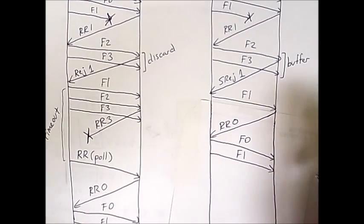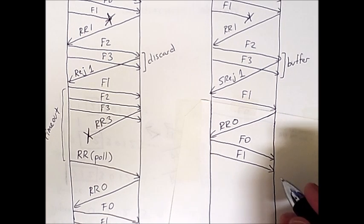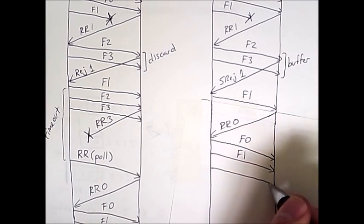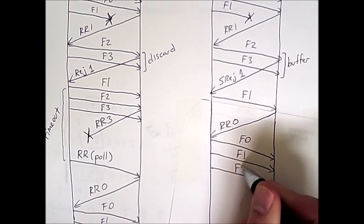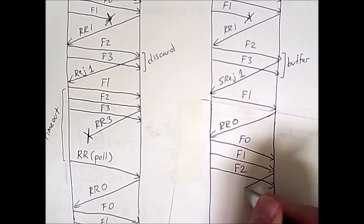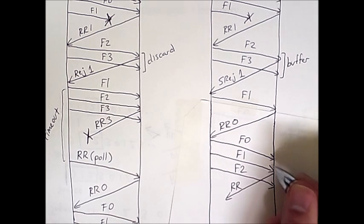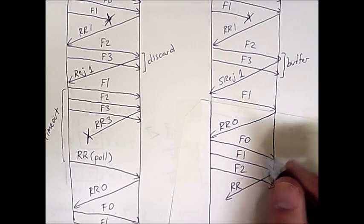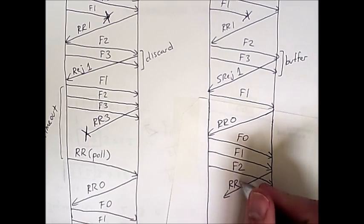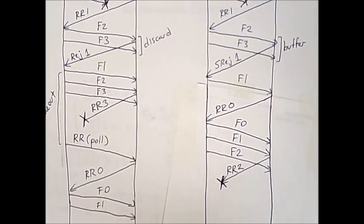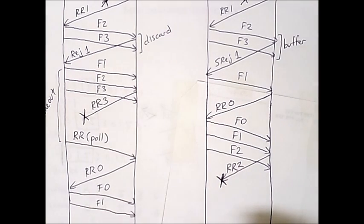But the other issue to be concerned about is what happens when a ready-to-receive message from the destination is lost. So the source will happily send up to 3 frames without having any pause. And let's say we have a ready-to-receive message here that got lost. And so after receiving this 1, the destination will be ready to receive 2, but this message is lost. And the question is, how does the source respond?